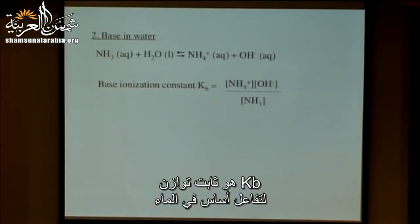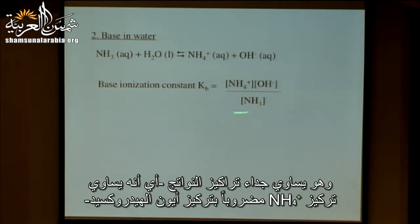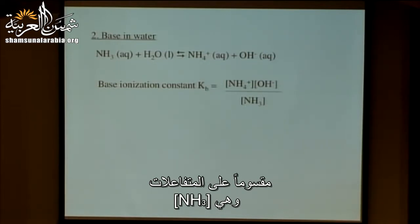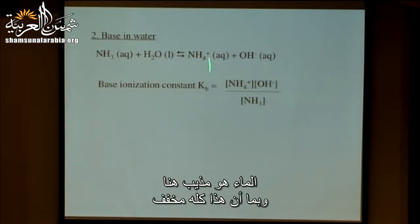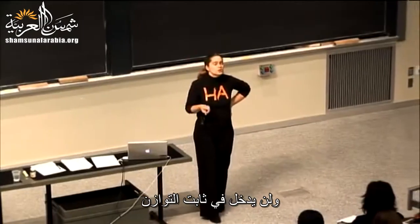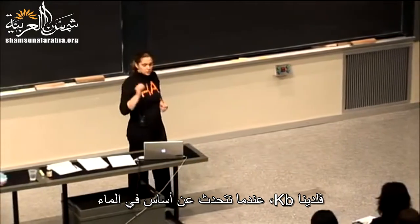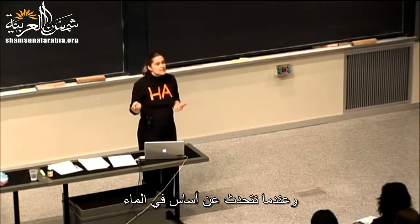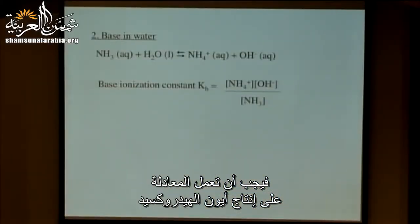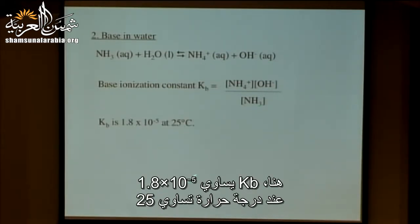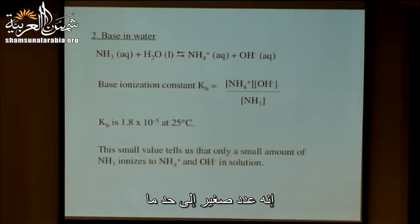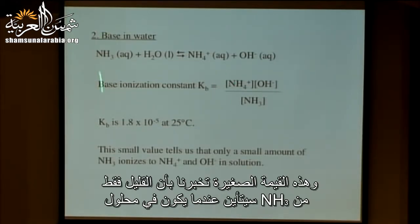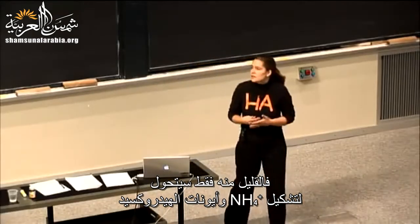Kb is an equilibrium constant for the reaction of a base in water. It's equal to the products, NH4+ and hydroxide ion, over the reactant NH3. Water is the solvent and its concentration isn't going to change, so it's not included. The Kb here is 1.8×10⁻⁵ at 25°C — a fairly small number. That small value tells us only a little bit of the NH3 will ionize to form NH4+ and hydroxide ions, meaning it's a weak base.